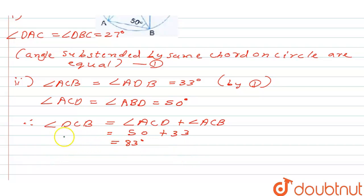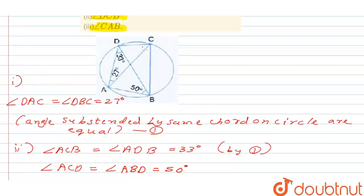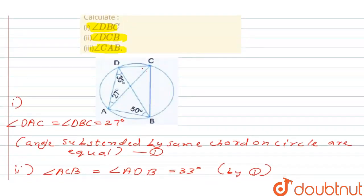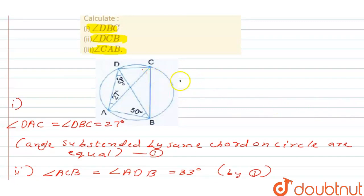Now we will find the third one, that is angle CAB. So to find angle CAB, first of all, as we know that ABCD is a cyclic quadrilateral.